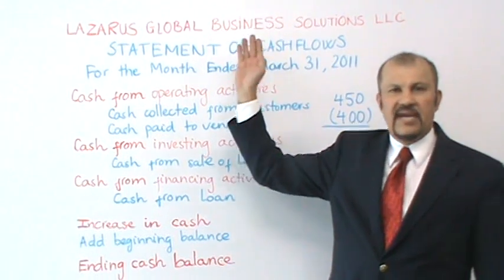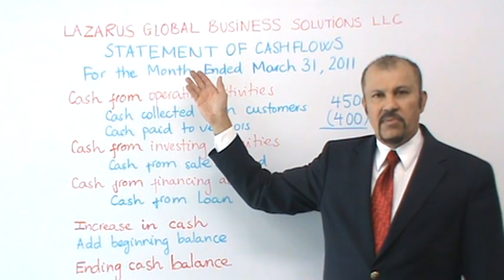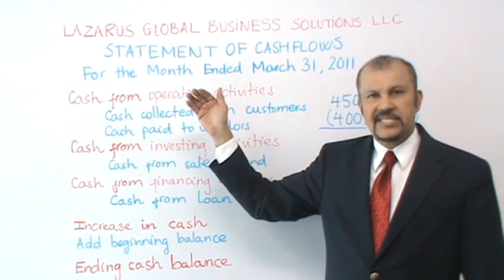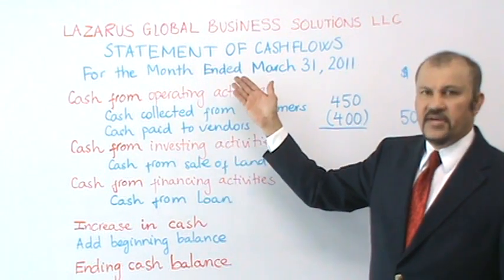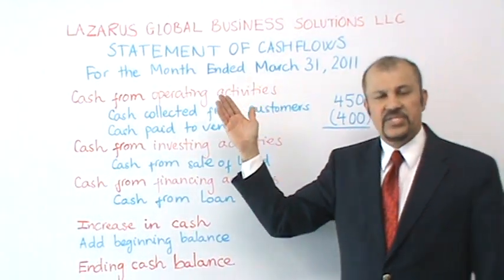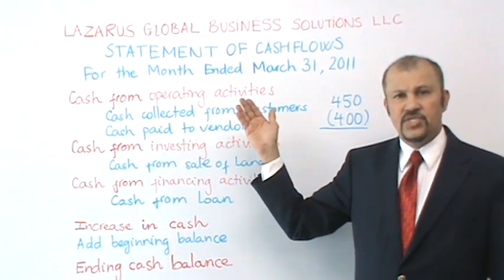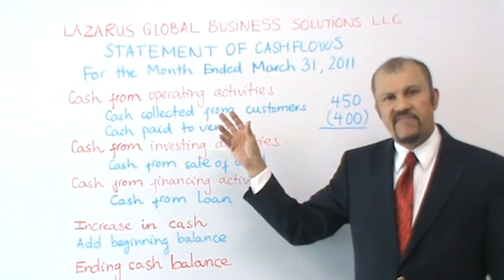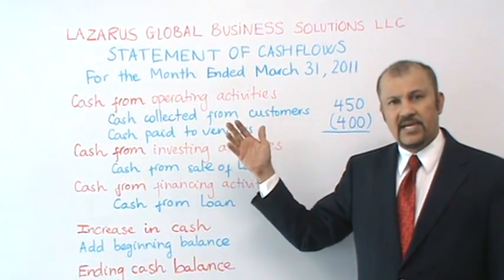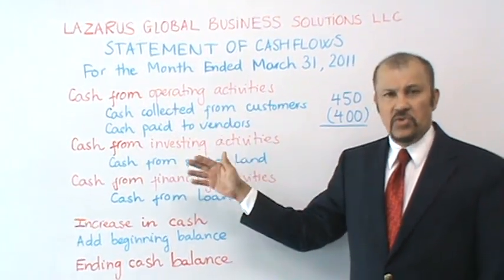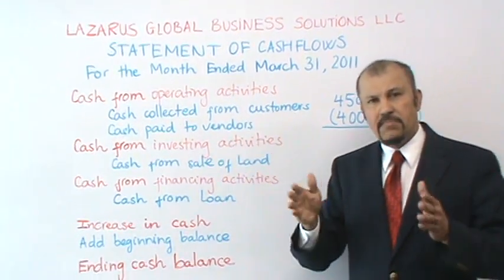You start off at the top by identifying the company name. I have taken the liberty of putting my company there, Lazarus Global Business Solutions. The next line identifies this document as the statement of cash flows. Then third, we have a time reference. In this case, the time reference says that this cash flow statement is prepared for the month ended March 31st. The time reference is important because it helps to put all of the numbers in the proper context — even before you start looking at the numbers, you know that the information is for a one-month period.